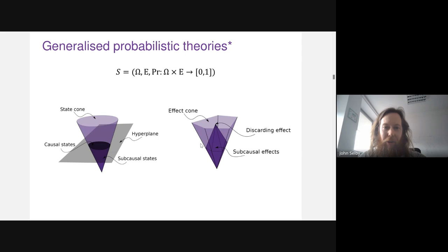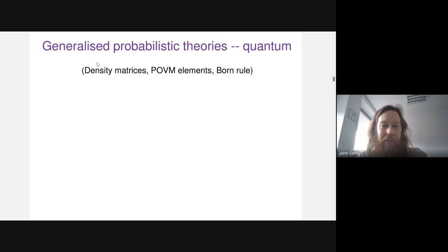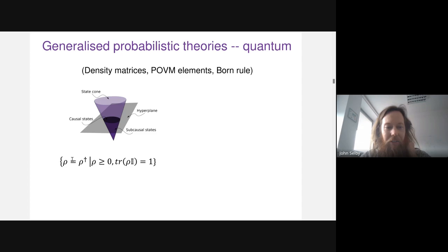That's an overview of the state and effect geometry. The probability rule is a bilinear mapping from these two vector spaces to the unit interval. In the case of quantum theory: the states are given by density matrices, the effects by POVM elements, and the probability rule is just the Born rule.